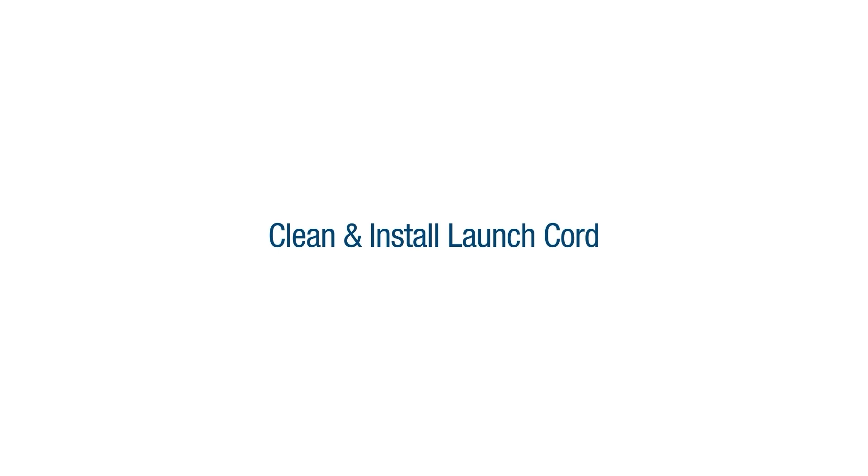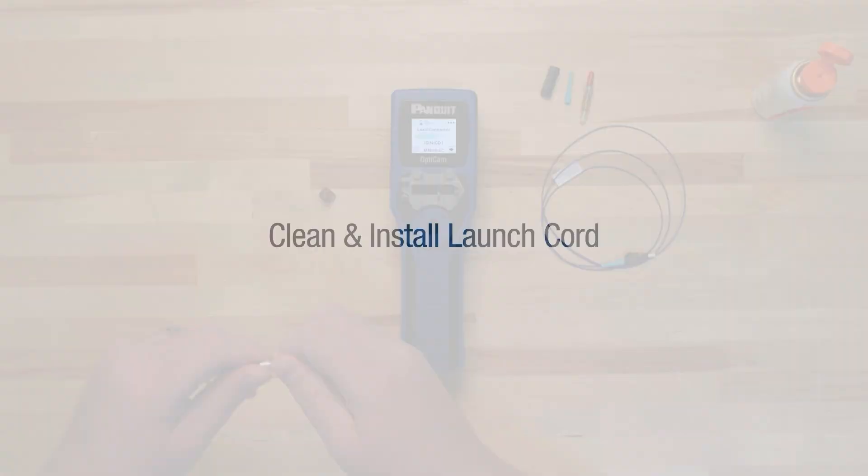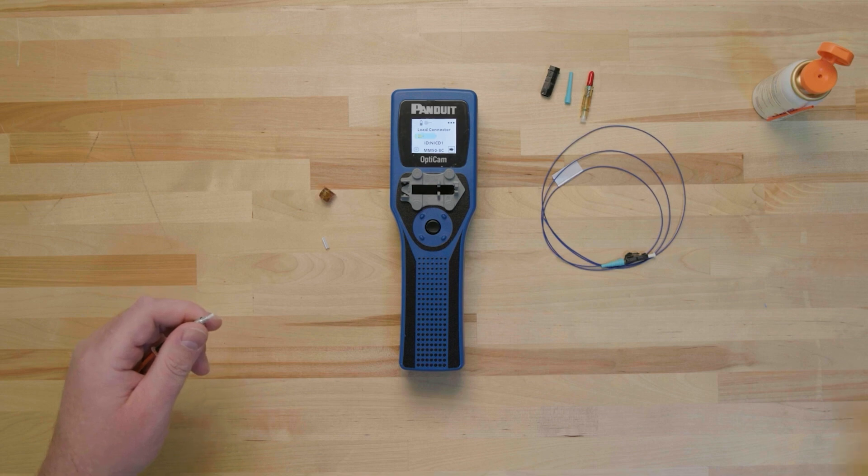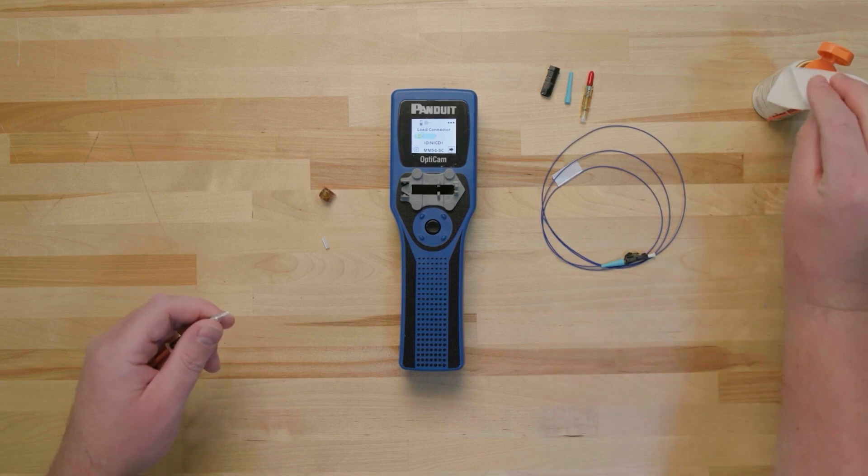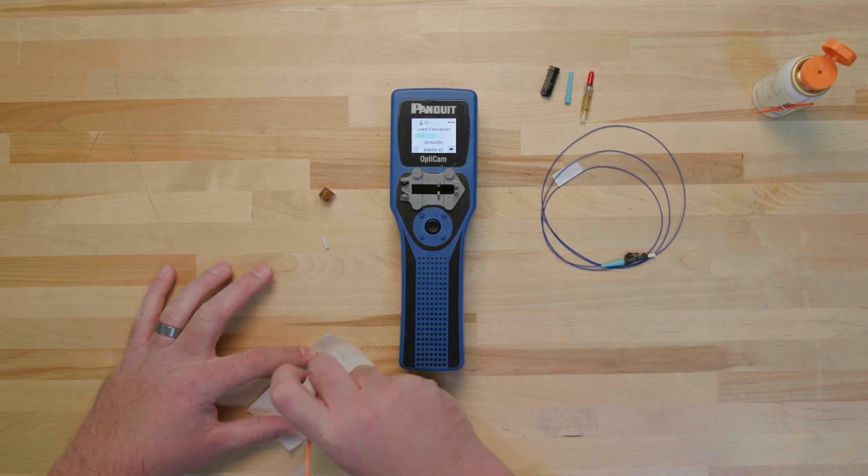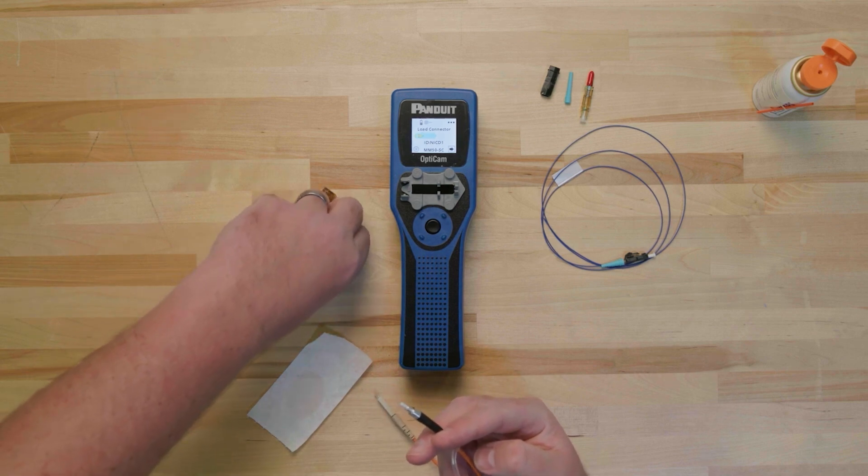Once the tool is clean and the settings are correct, it is time to clean and install the launch cord. It is vital to clean both ends of the launch cord every 50 to 60 terminations. To clean the launch cord, remove the adapter and alignment sleeve. Using an approved wipe and cleaning solution, clean the ferrule end face by running it from the wet portion to the dry portion of the wipe. Pre-saturated cleaning wipes are not recommended.